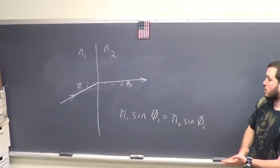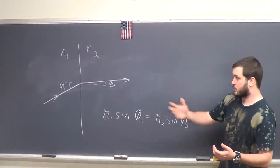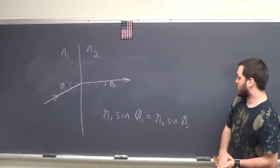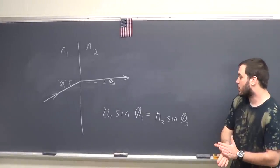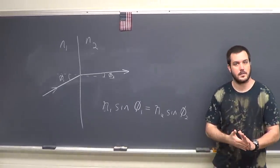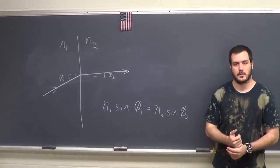The way we can solve for the different numbers is if three of the variables are known, then we can solve for the fourth using the relation that N1 sine theta1 is equal to N2 sine theta2, and that's Snell's Law.